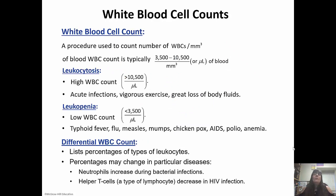A white blood cell count is used to count the number of white blood cells — usually 3,500 to 10,500. A high white blood cell count greater than 10,500 is called leukocytosis, which usually indicates an acute infection, vigorous exercise, or a great loss of body fluids. A low white blood cell count lower than 3,500 is leukopenia, which could be indicative of typhoid fever, flu, measles, mumps, chicken pox, AIDS, polio, anemia, or many viral infections.